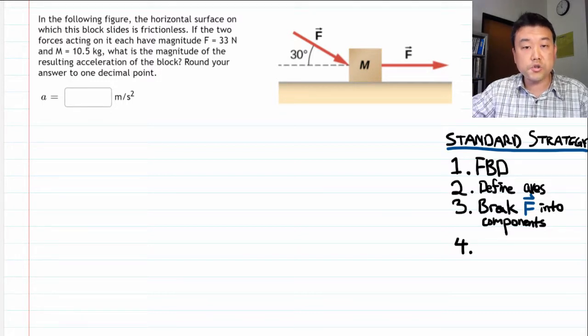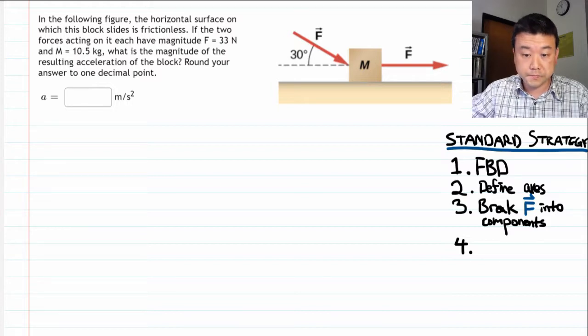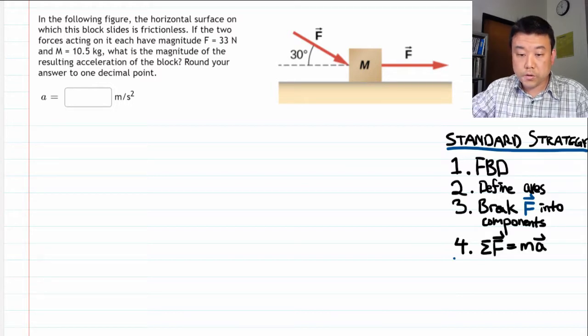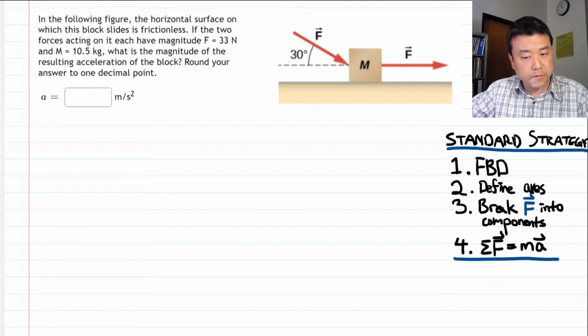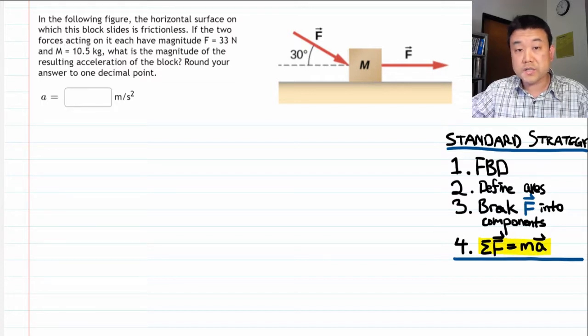And all these steps are really leading up to the final step in the strategy, which is the Newton's second law equation. And usually when you get to this point, you haven't finished solving the problem. What you have done is you have set up an equation, which then can be algebraically solved for whatever the question asks. So there are some mathematical steps to be done.